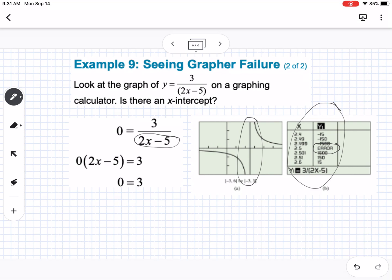And what it shows here is that you can plug in 0 for y and solve. So we could multiply both sides by 2x minus 5. That just turns into 0. And 0 does not equal 3. So that tells us that there is no x-intercept on this graph. Okay? So that is section 1.1. Let me know if you have any questions.